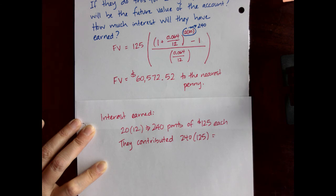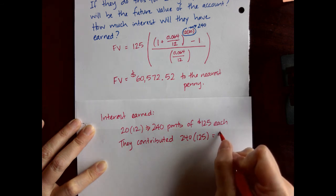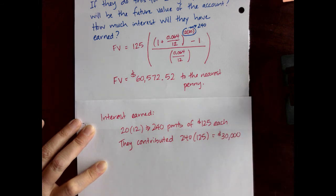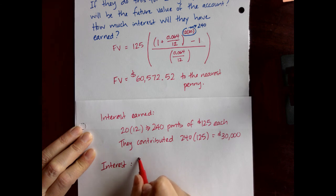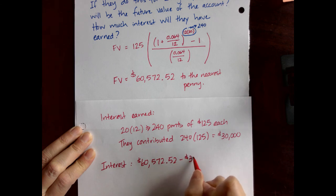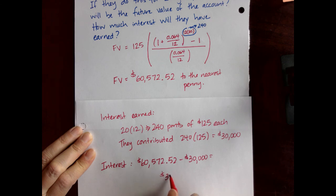So the total that they contributed would be 240 times 125. They contributed $30,000. That's how much they put in over all of that time. And so then the interest earned would be the gap or the subtraction between $60,572.52 and the $30,000 that they put in. And when you do that subtraction, you find out that they earned $30,572.52.